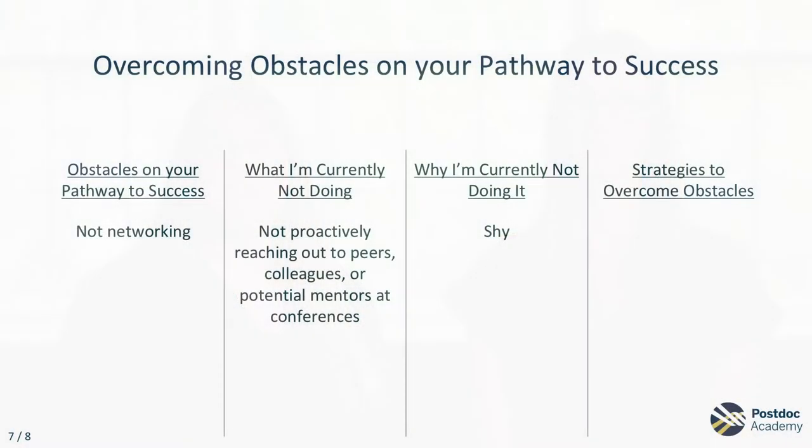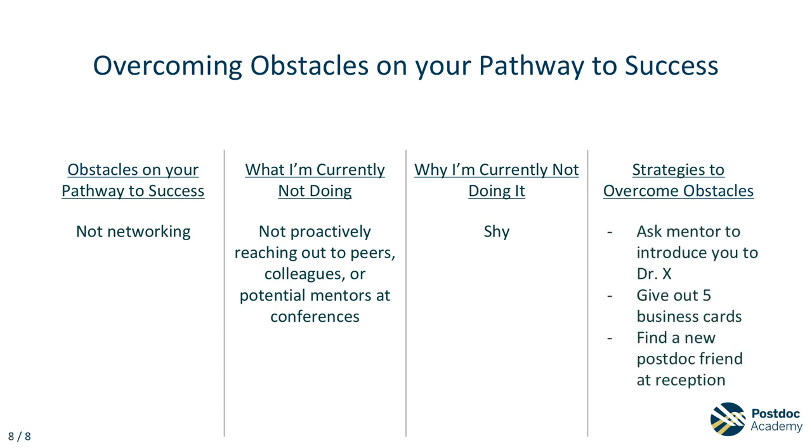The last step of this activity is to crowdsource strategies to overcome these obstacles. This is where we identify those strategies and actions that are needed to overcome the obstacles — how are you going to stop it, and what resources do you need? For the example we've been using, some strategies could be to ask your mentor to introduce you to someone, or give you five business cards, or to find a new postdoc friend at the conference reception. You'll share these crowdsourced ideas in the last box.